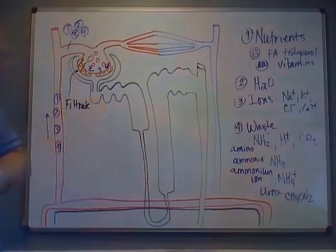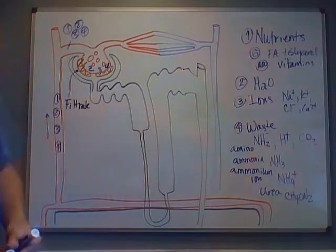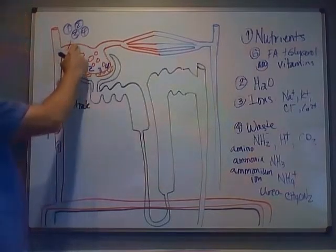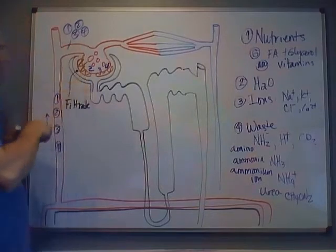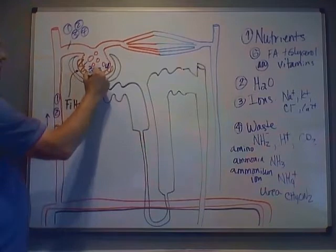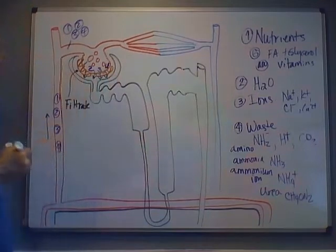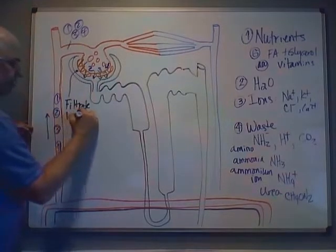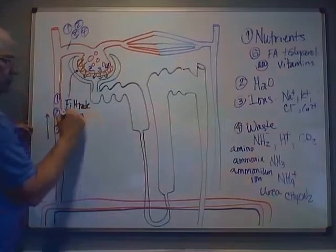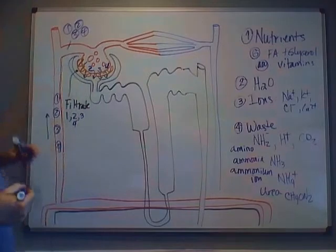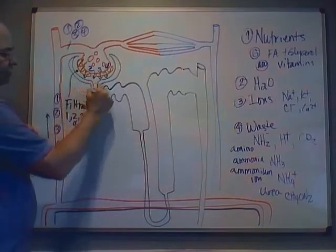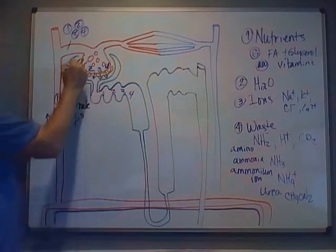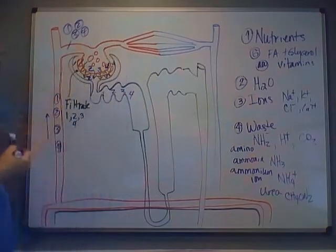All of this is in the note set on page 89 under the principles of renal physiology. As long as the fluid is inside the capillary, it's plasma. Once it crosses the filtration membrane, it becomes filtrate. Filtrate has all four compounds: water, nutrients, ions, and waste — all entering the proximal convoluted tubule.